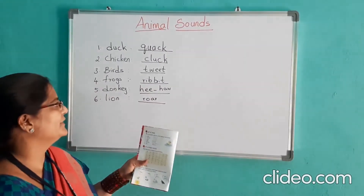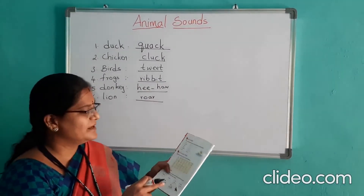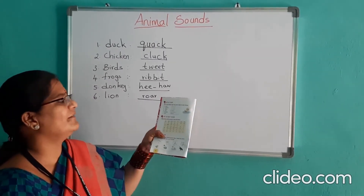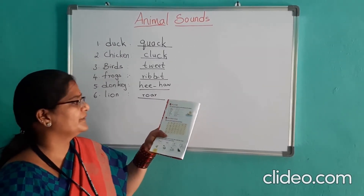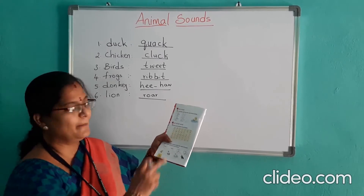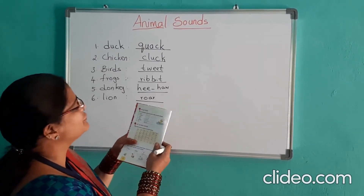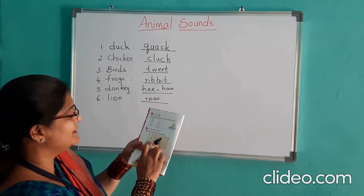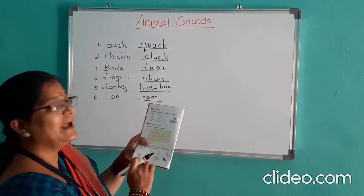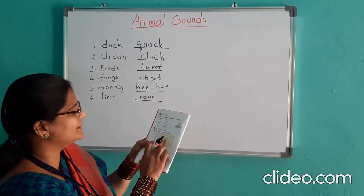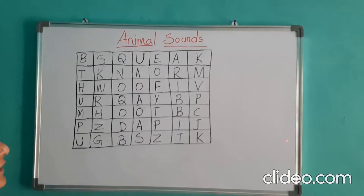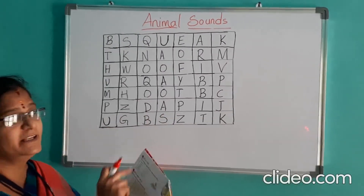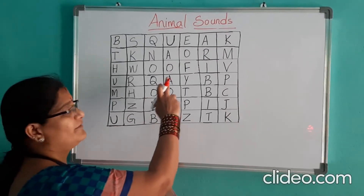Now, after writing this, next, second one, we have a puzzle. You have to find the sound of some animals. This is the second bit. In this, you have a puzzle.